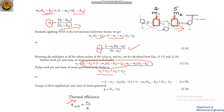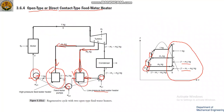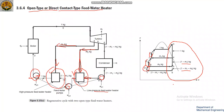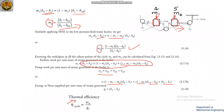The pump work Wp equals Wp1 plus Wp2 plus Wp3, which is: (1 minus M1 minus M2) into (H8 minus H7) plus (1 minus M1) into (H10 minus H9) plus (H2 minus H1).